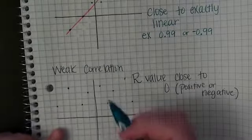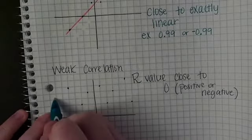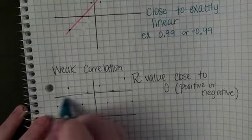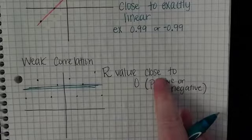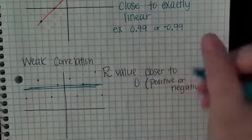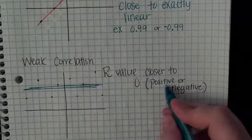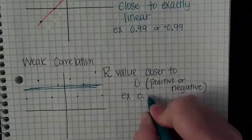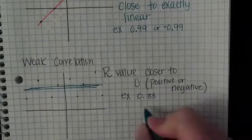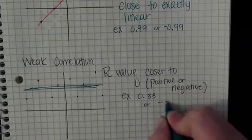As the points get further apart it's weaker and weaker. So a weak correlation, it's getting pretty close to a no correlation. An R value closer to zero and it can be positive or negative. An example would be 0.33 or negative 0.33.